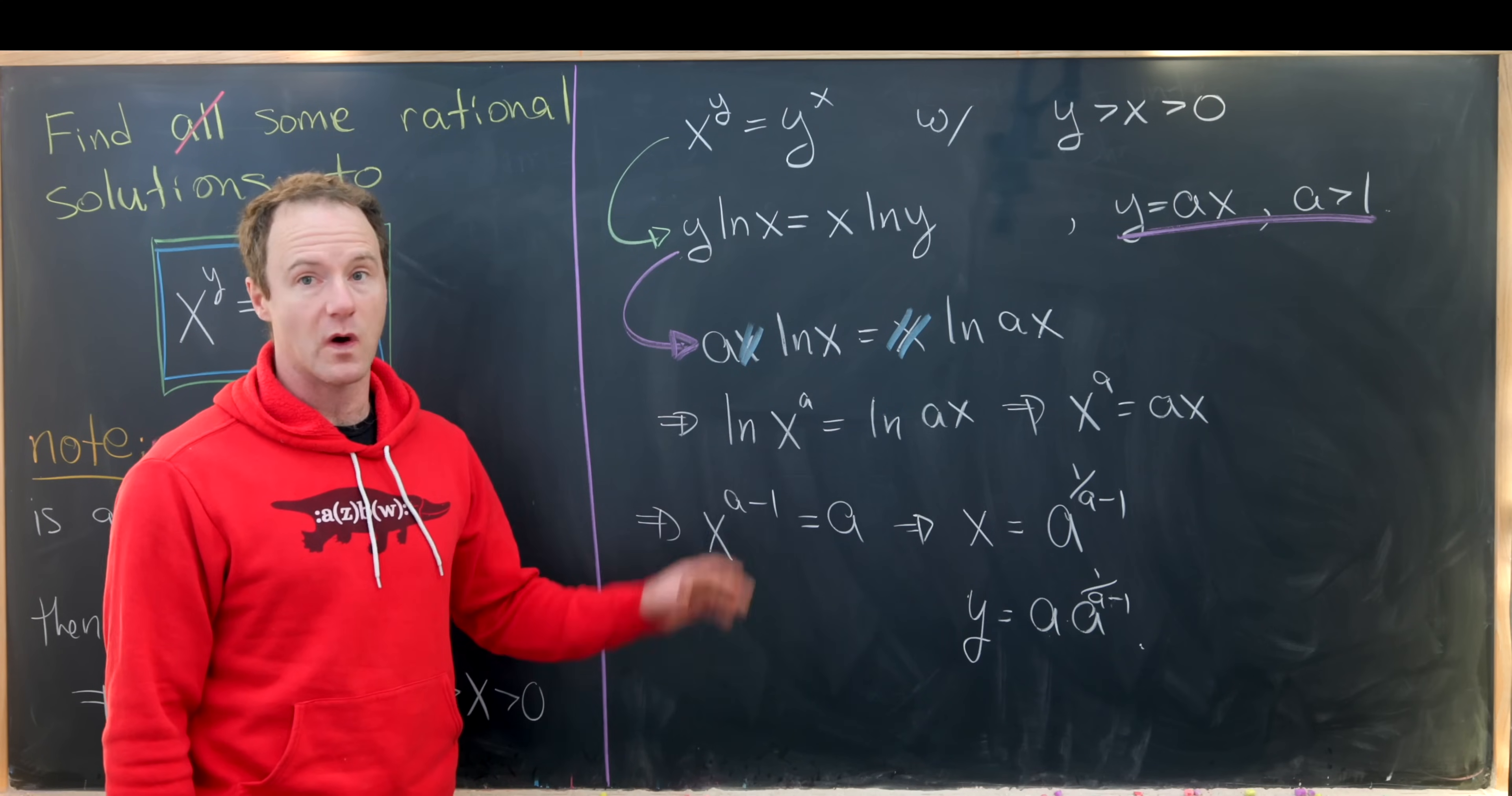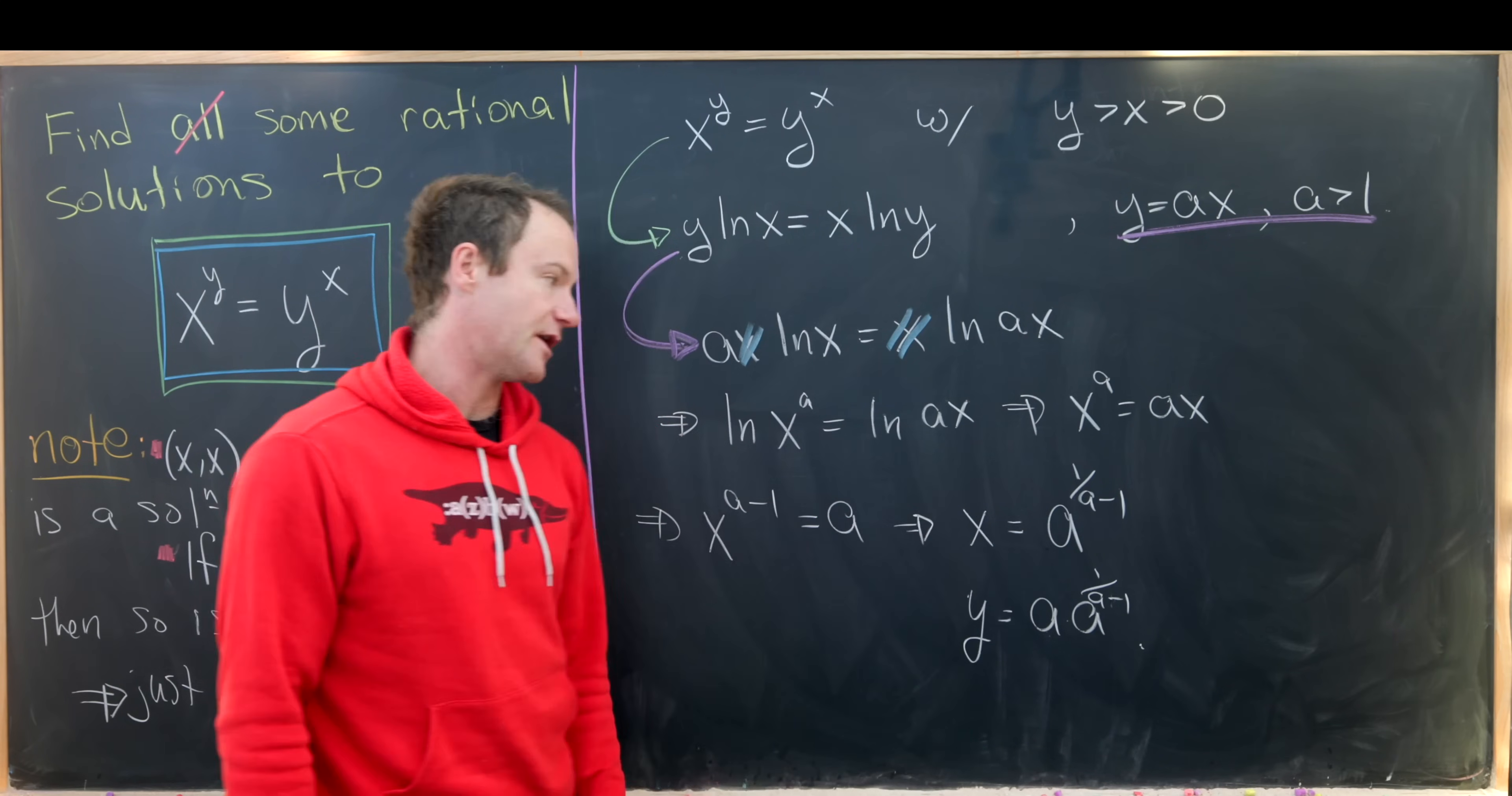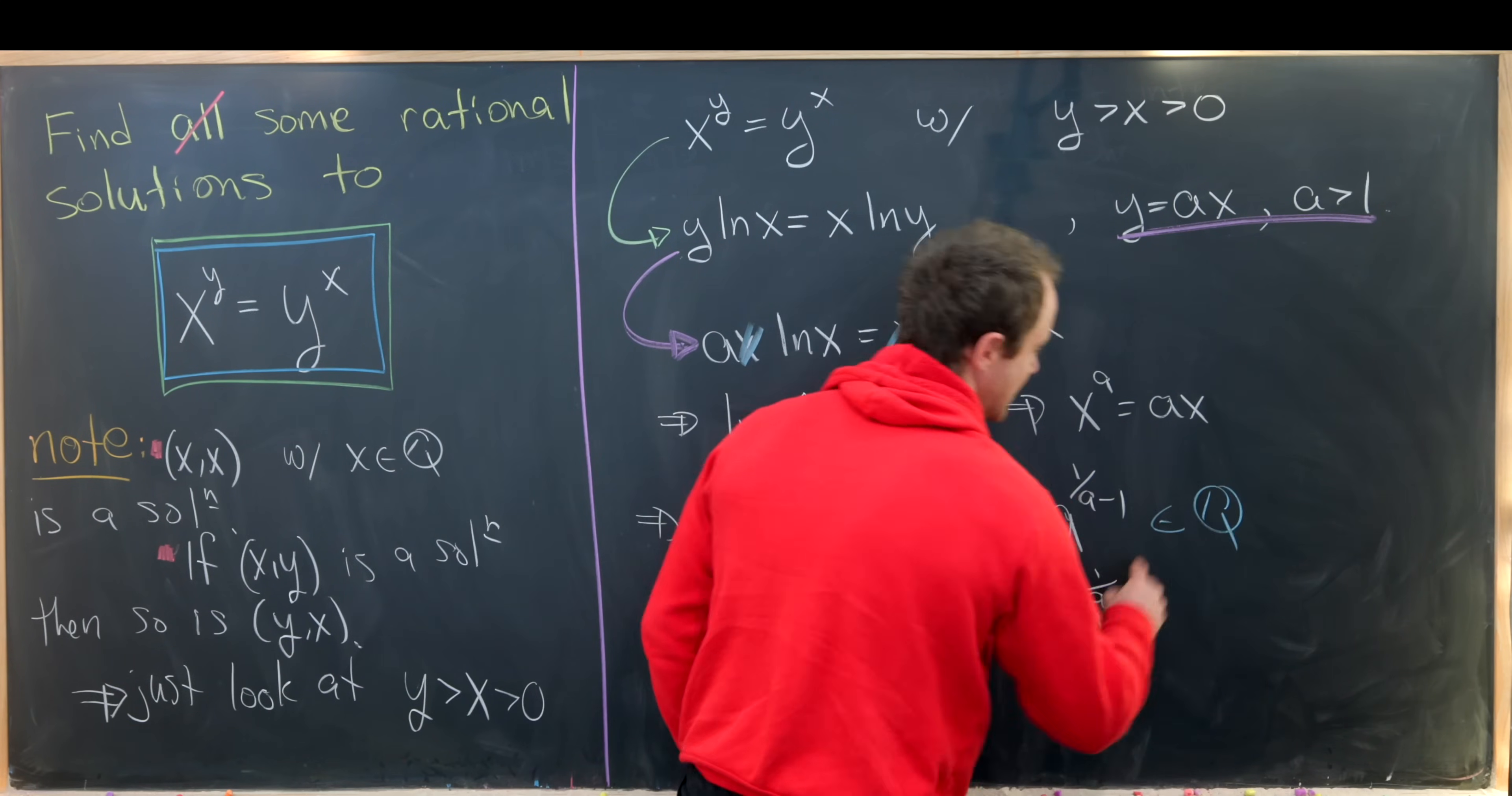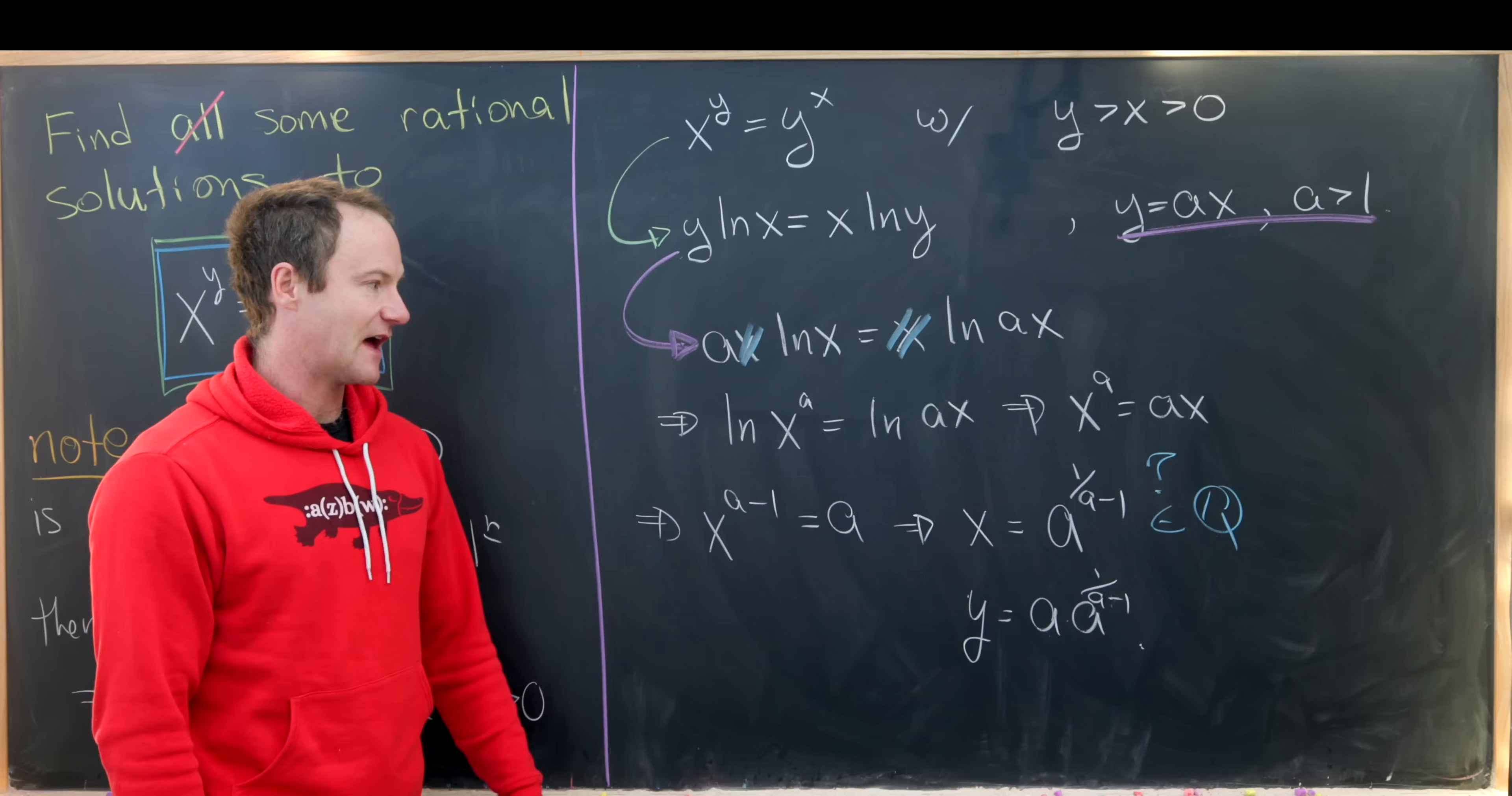So now the real question remains is when is this a to the one over a minus one a rational number? So let's put when is that a rational number? And we'll investigate that on the next board.